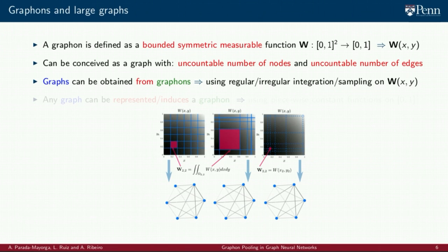Graphons can also be used to generate graphs. For instance, performing sampling and integration on a regular or irregular grid on the unit square, an adjacency matrix can be generated. But graphons can also be induced or generated from a graph. This can be done using piecewise constant functions whose amplitudes are defined by the entries of the adjacency matrix of the graph.